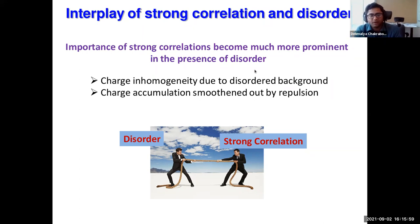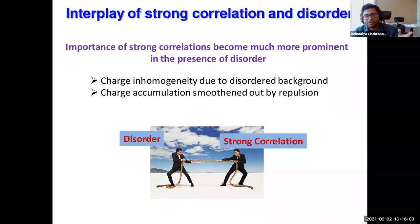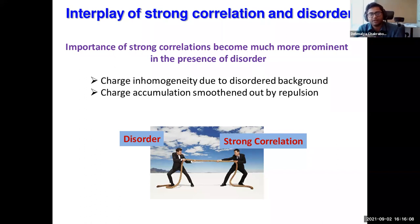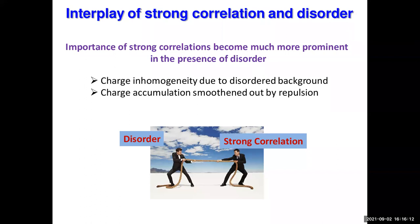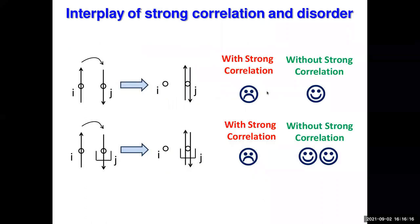Physically, disorder wants to make the charge distribution inhomogeneous — wherever there is a potential well you want to pile up charge there; if there is a potential hill you want to get rid of charge there.